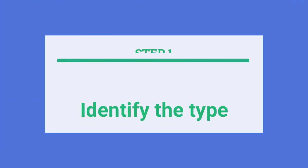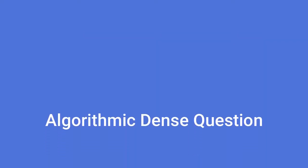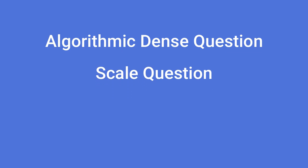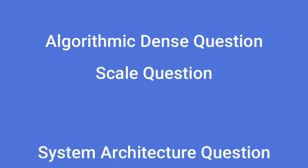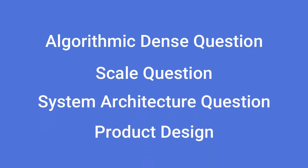Step 1: Identify the type of question. Typically there are four core types of system design questions. In an interview, you will essentially get a blend of them. They are: algorithmic dense question, scale question, system architecture question, and product design.